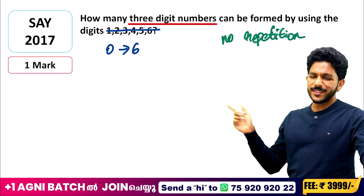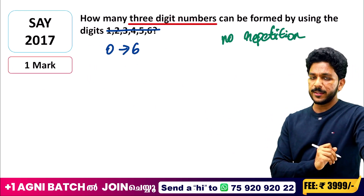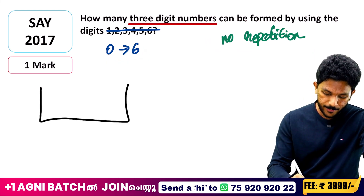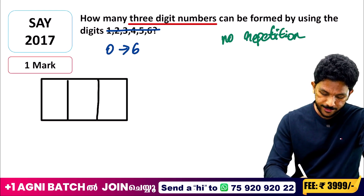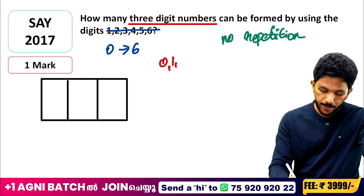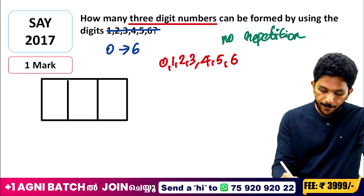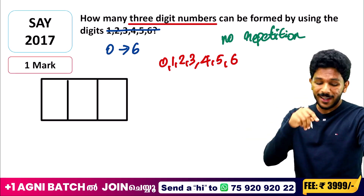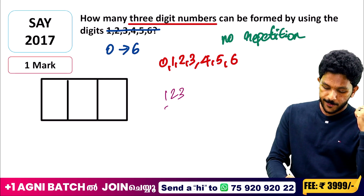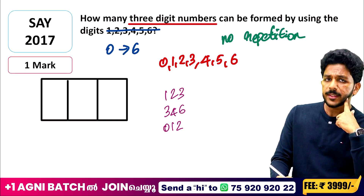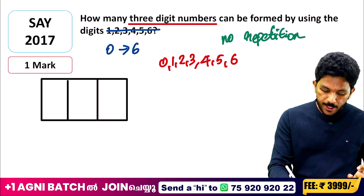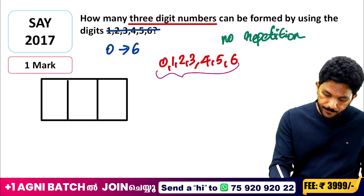Now the last question: how many 3-digit numbers can be formed with no repetition using digits 0, 1, 2, 3, 4, 5, 6? Here the key point is that 0 cannot be the leading digit — if 0 is in the hundreds place, it becomes a 2-digit number, so 0 is excluded from the first box. We have seven numbers total.